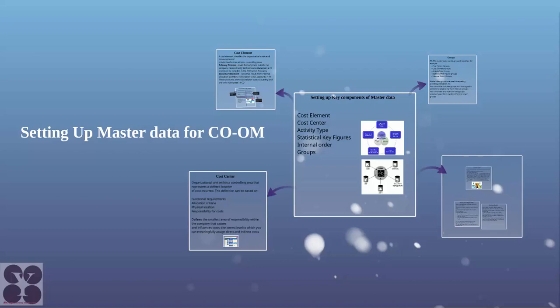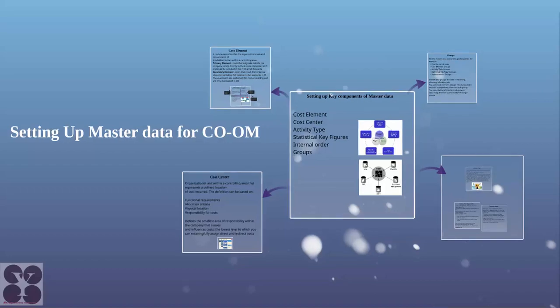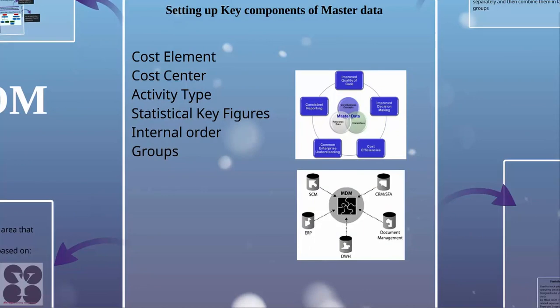In this chapter we'll be learning about setting up master data for overhead management, covering key components: cost elements, cost centers, activity types, statistical key figures, internal orders, and groups. This master data helps us report appropriately, improve quality care, ensure consistent reporting, and drive cost efficiency. Setting up master data plays a key and important role in overhead management.